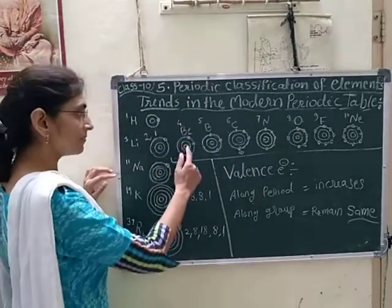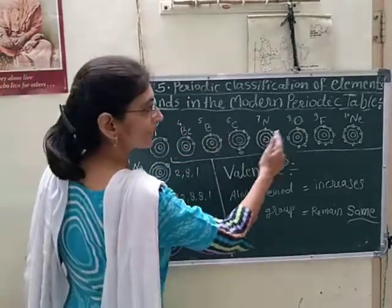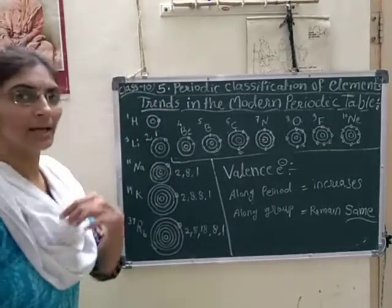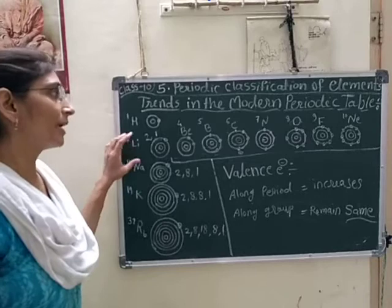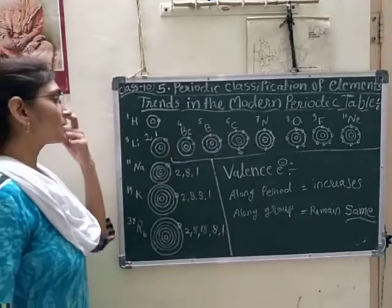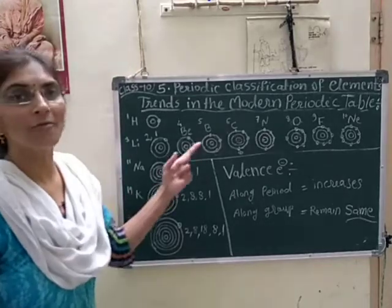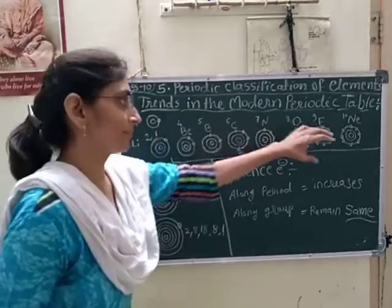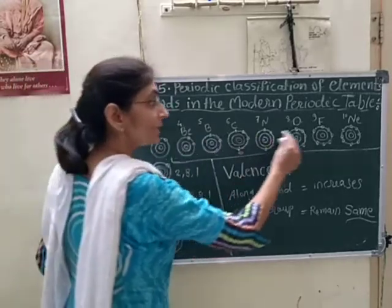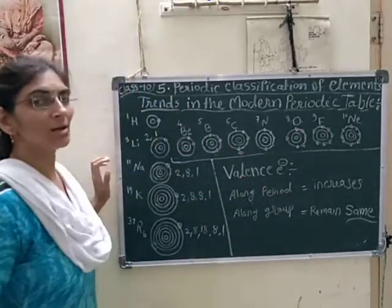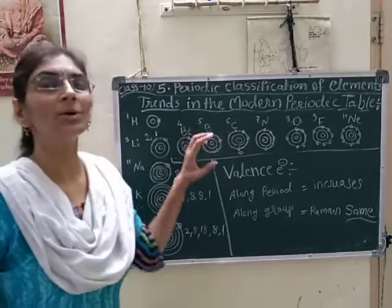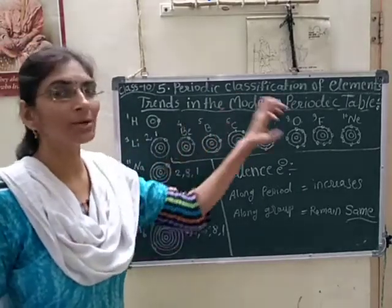The second period is lithium, beryllium, boron, carbon, nitrogen, oxygen, fluorine and neon. For our study of the trend, we have considered the second period and first group. So first we will see the trend of valence electron along the period. Valence electrons are in increasing order and they are in consecutive numbers.